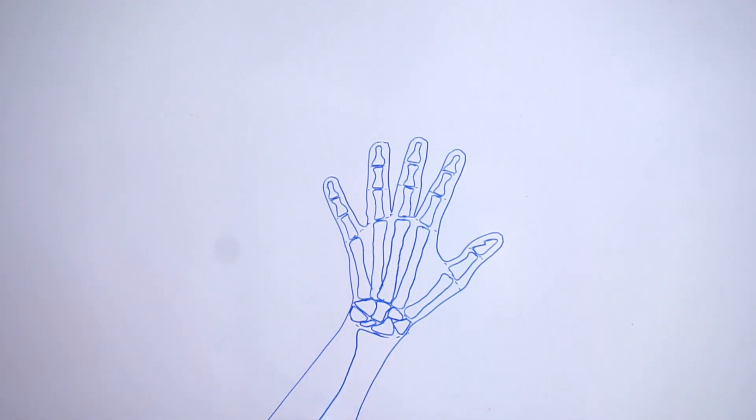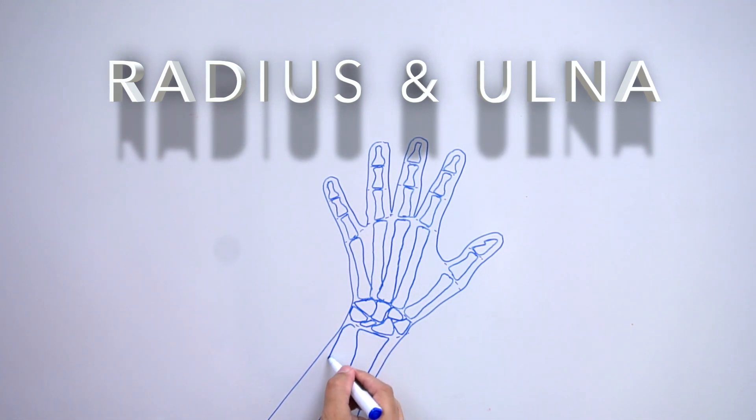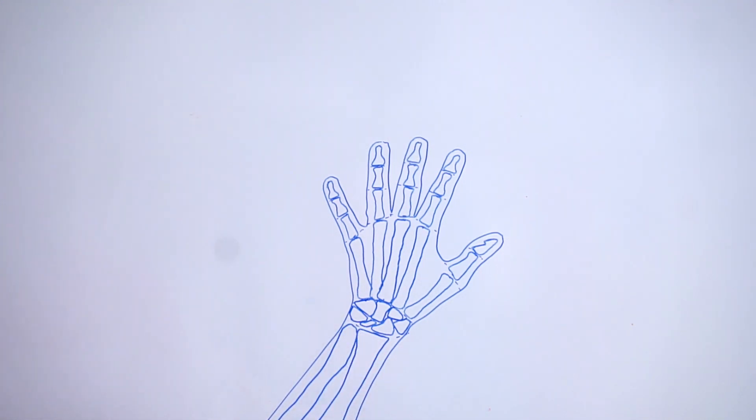Now we're going to do the bones for the arms. One is called the radius, and the other one is called the ulna. And there you have it.